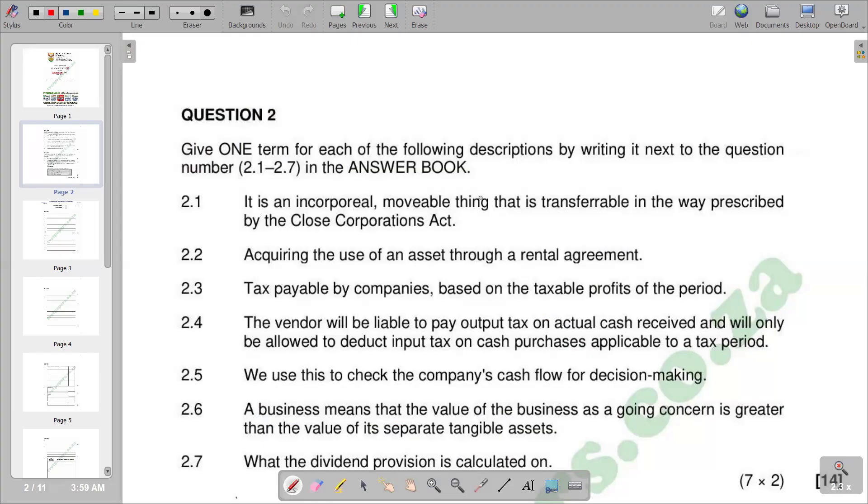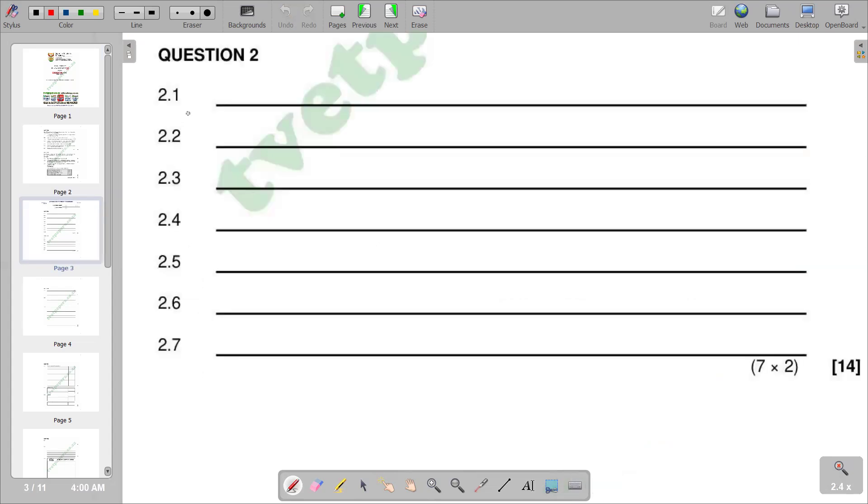The first part, 2.1, is: it is an incorporeal movable thing that is transferable in the way described by the Close Cooperation Act. Basically when we are talking about incorporeal, we are talking about something that does not have a physical existence. The correct answer that we have concerning 2.1 is member's interest. Remember the question is instructing to give one term for each of the following descriptions. For 2.1 the answer is member's interest, and member's interest refers to the extended ownership that each member has in the company.